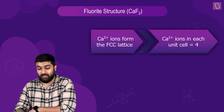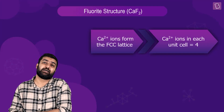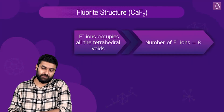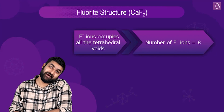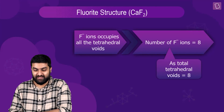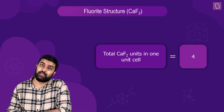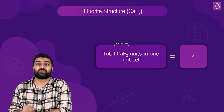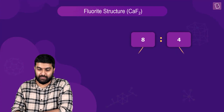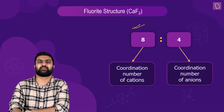These cations are forming the lattice, and the positive ions per unit cell turn out to be four. Similarly, F⁻ occupies all the tetrahedral voids, so their number turns out to be eight. As a result, the number of CaF₂ formula units per unit cell turns out to be four.